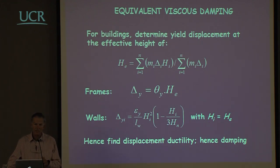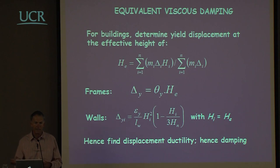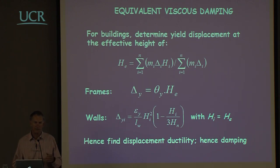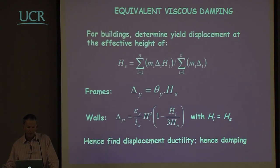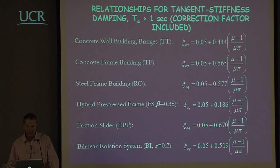Notice that at no stage here has strength come into the calculations — this is independent of the strength. We would have the same value whether the structure had a base shear capacity of 5% or 20%, provided the geometry remained the same. Having calculated the ductility, we can calculate the equivalent viscous damping of this single degree of freedom system, dependent on what type of structural element.